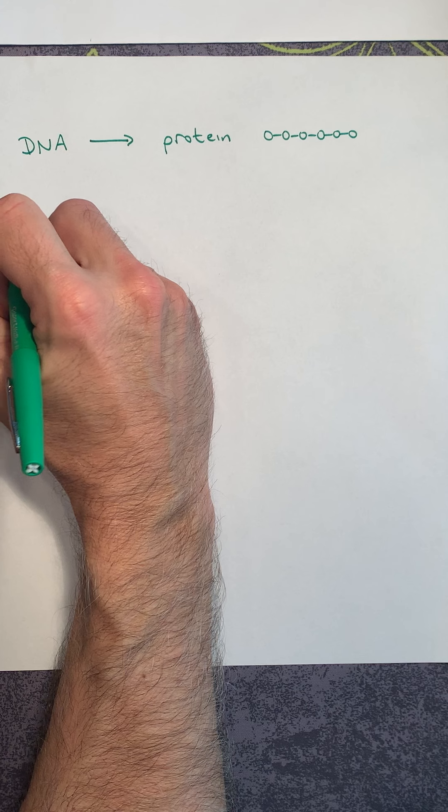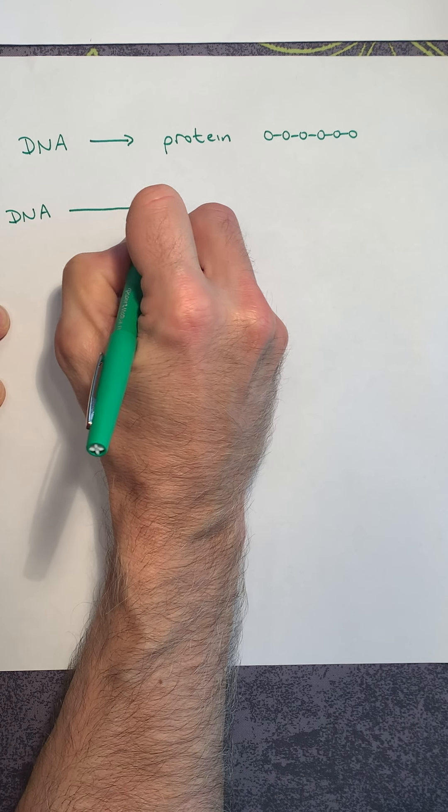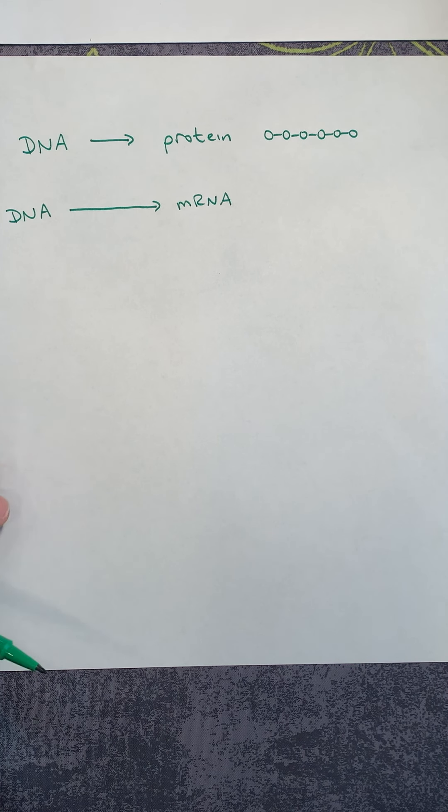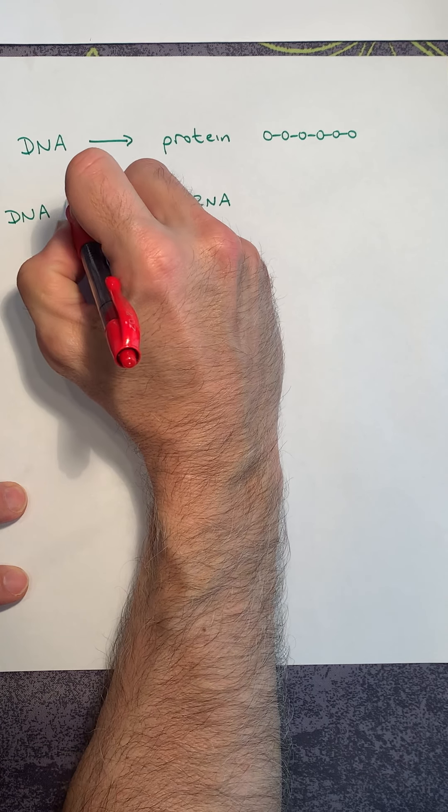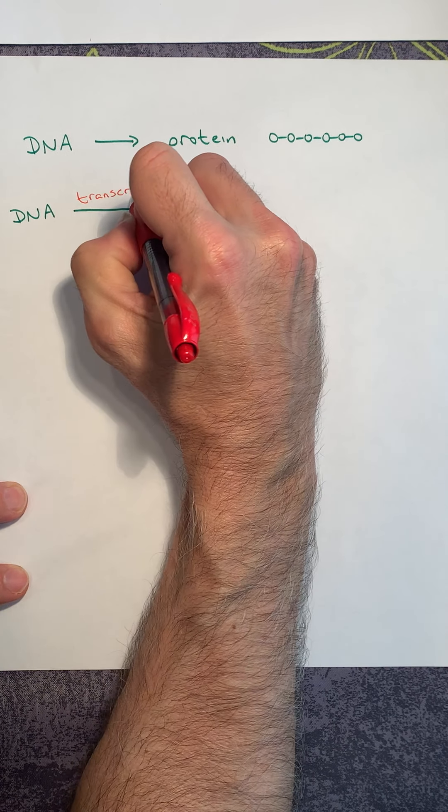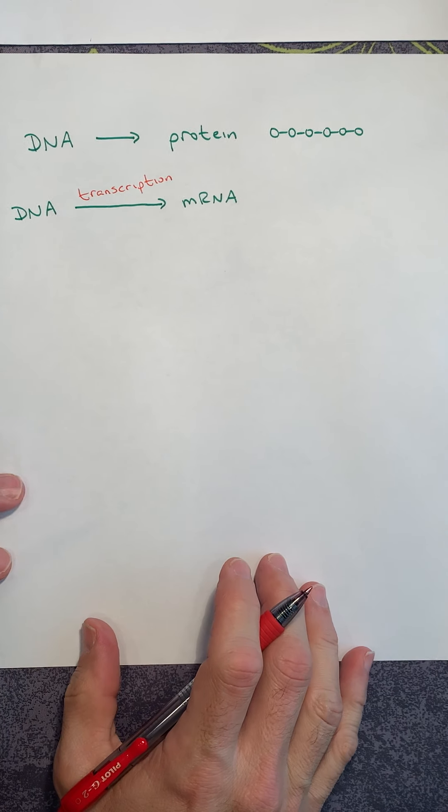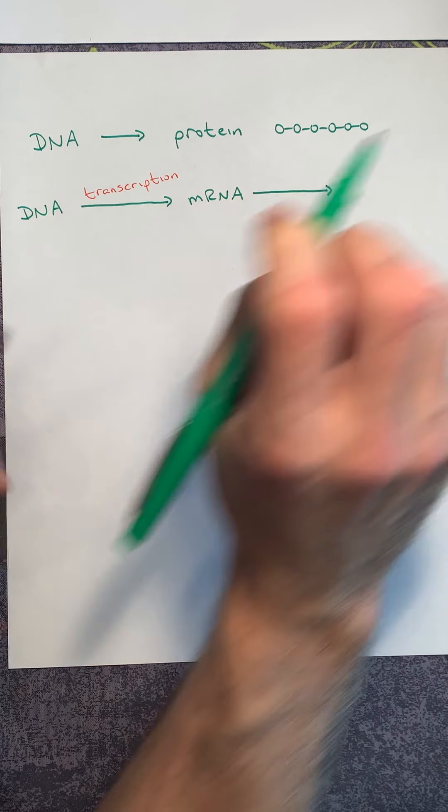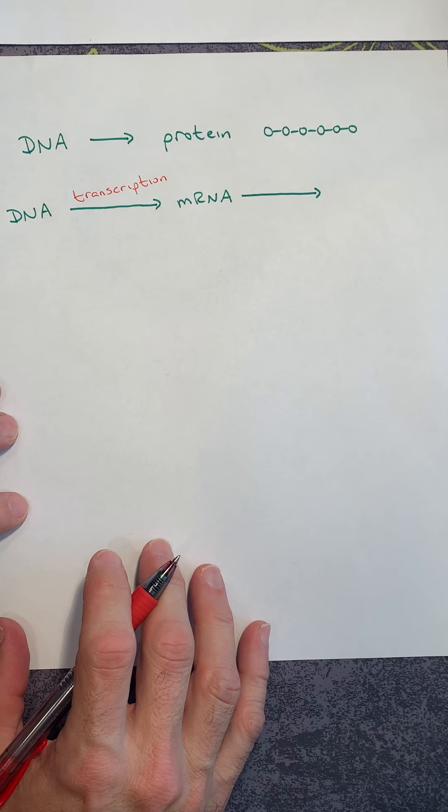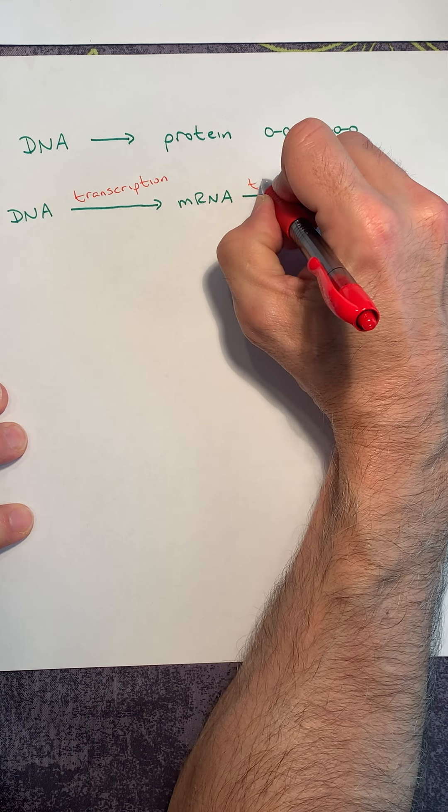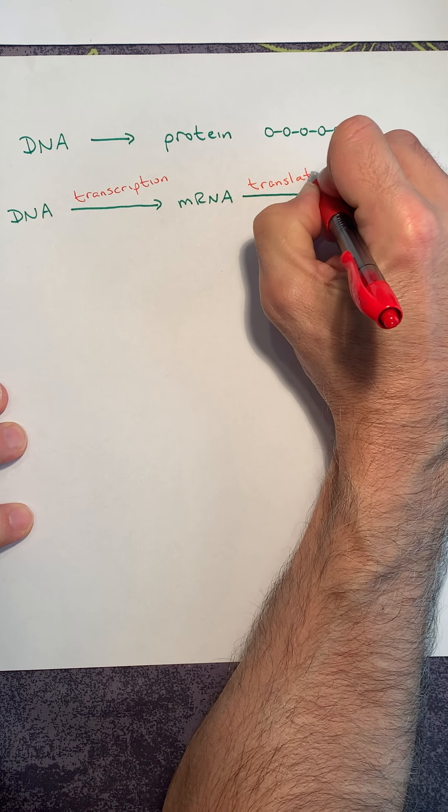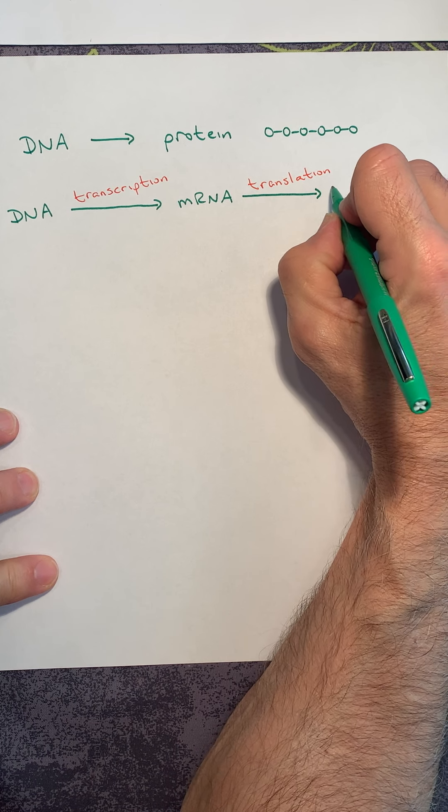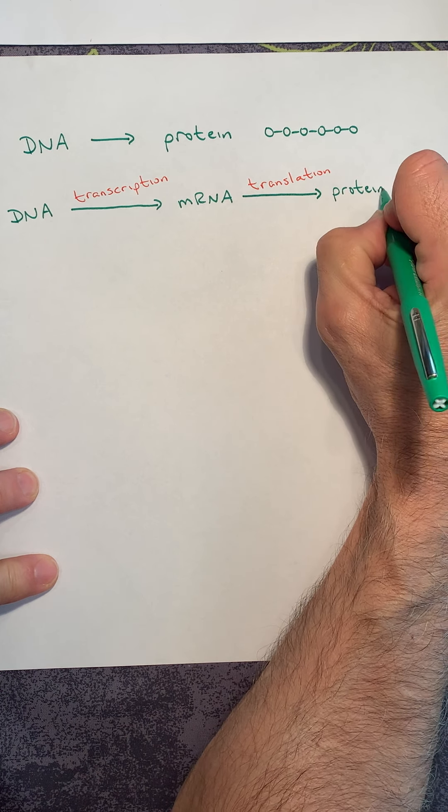We then got into more detail and we said DNA is read to make a molecule called messenger RNA. This occurs in the nucleus of the cell. When you read DNA to make messenger RNA, that process is called transcription. The messenger RNA then leaves the nucleus, goes out into the cytoplasm where the messenger RNA is read by the ribosome. When the ribosome reads the messenger RNA and brings in amino acids, that process is called translation. As the ribosome bonds the amino acids together in a very specific order, it makes a protein.